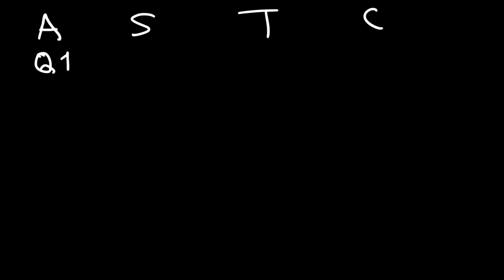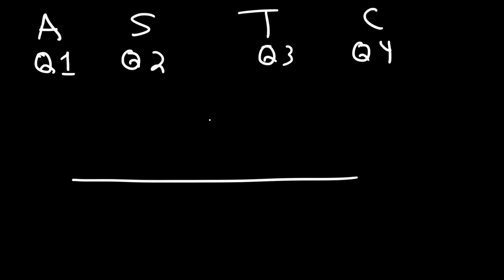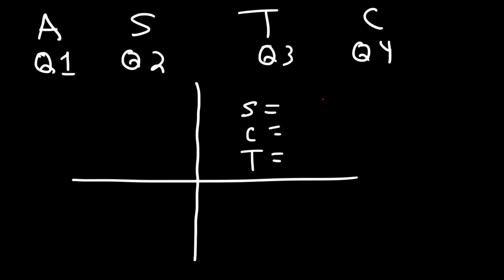Have you heard the expression 'All Students Take Calculus'? It's a trig mnemonic to remember which ratios are positive or negative in each quadrant. A (All): in quadrant 1, sine, cosine, and tangent are all positive. S (Students): in quadrant 2, only sine is positive.